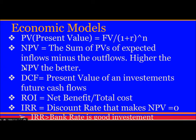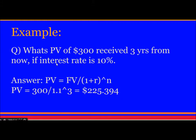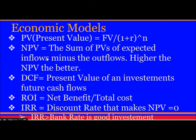Higher NPV is better. From an exam point of view, if NPV values are given, simply select whichever project has the higher NPV. DCF is Discounted Cash Flow, calculated as the present value of an investment's future cash flow. ROI is Return on Investment: Net Benefit divided by Total Cost. IRR is the discount rate that makes NPV equal to zero — if IRR is greater than the bank rate, it is a good investment.